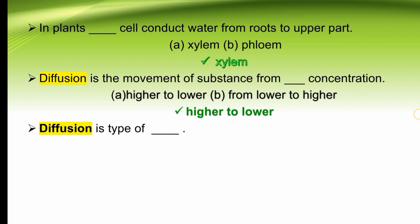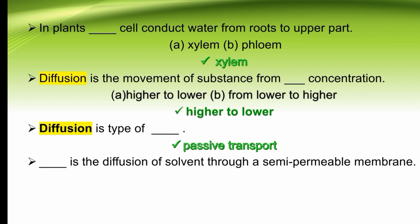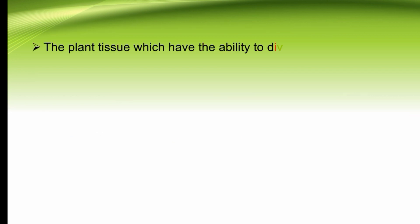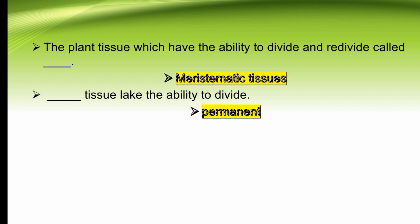Diffusion is a type of dash — passive movement or passive transport. Diffusion is a type of passive transport. Dash is the diffusion of solvent through a semi-permeable membrane. Dash is a group of cells which perform a common function — tissue. The plant tissue which has the ability to divide and re-divide is called dash — meristematic tissue. Meristematic tissue can divide and re-divide. Permanent tissue lacks the ability to divide and re-divide.